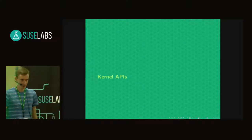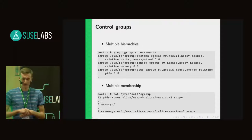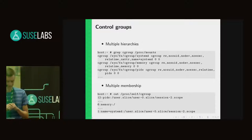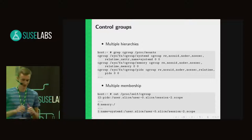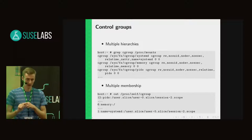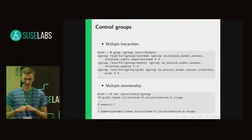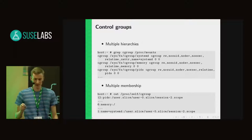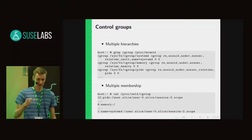Let's start with the control groups. Control groups are a kernel mechanism to group processes — group tasks into groups. From the data model point of view, cgroups form a hierarchy which is a tree, and there can be multiple hierarchies. Each task can be a member of more cgroups in different hierarchies.